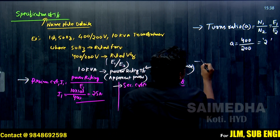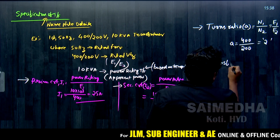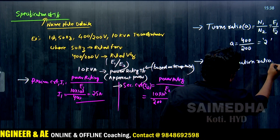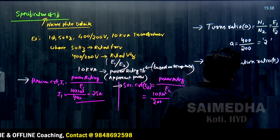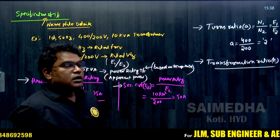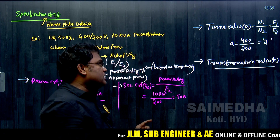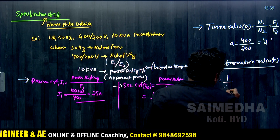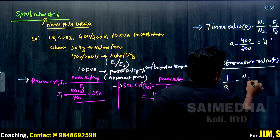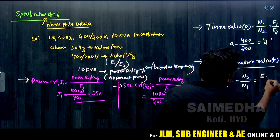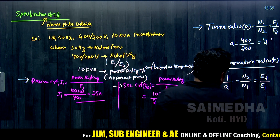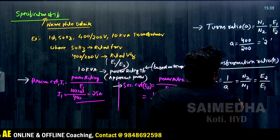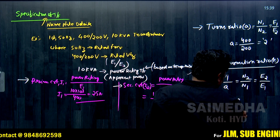Next is the transformation ratio. The transformation ratio k is the reciprocal of the turns ratio, represented as N2 by N1, which equals E2 by E1: 200 divided by 400, giving k equal to 0.5.